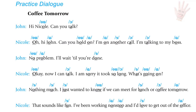Vowel contrasts dialogue for Uh, Ah, Aw, and O. Hi Nicole, can you talk? Oh hi John, can you hold on? I'm on another call — I'm talking to my boss. No problem, I'll wait till you're done. Okay, now I can talk. I'm sorry it took so long. What's going on? Nothing much. I just wanted to know if we can meet for lunch or coffee tomorrow. Oh, that sounds like fun. I've been working non-stop and I'd love to get out of the office.